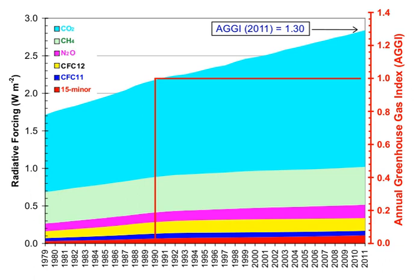The contribution of each gas to the greenhouse effect is determined by the characteristics of that gas, its abundance, and any indirect effects it may cause. For example, the direct radiative effect of a mass of methane is about 84 times stronger than the same mass of carbon dioxide over a 20-year time frame, but it is present in much smaller concentrations so that its total direct radiative effect is smaller, in part due to its shorter atmospheric lifetime.